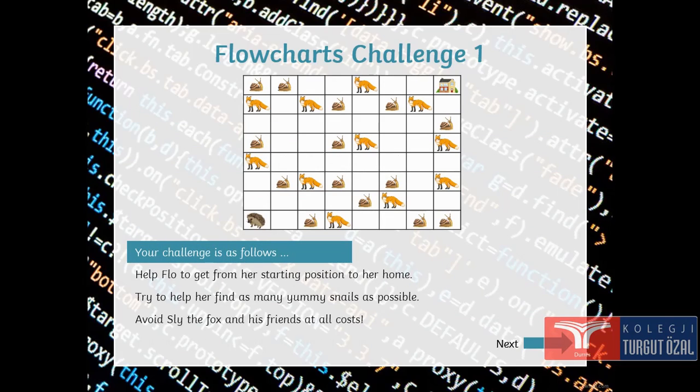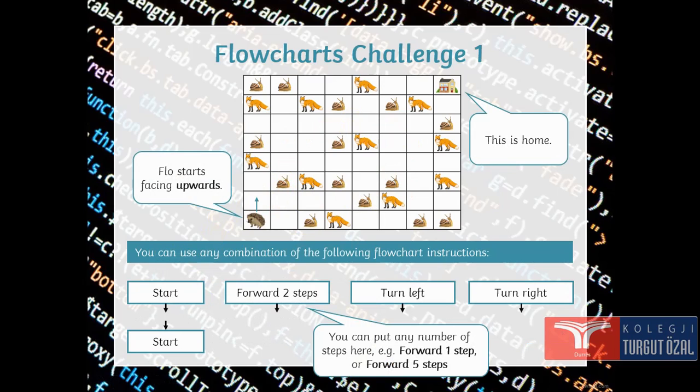Here, I will post this. Your challenge is as follows. Help Flow to get from her starting position to go to her home. Flow is here and home is here. Try to help her find as many yummy snails as possible. Avoid Sly, the fox and his friends at all costs. Do you see? You can avoid this and make Flow eat snails. You must draw a flow chart to plan this. Flow chart starts facing upwards. She can eat a snail here and then she can go home eating other snails and avoiding the fox.